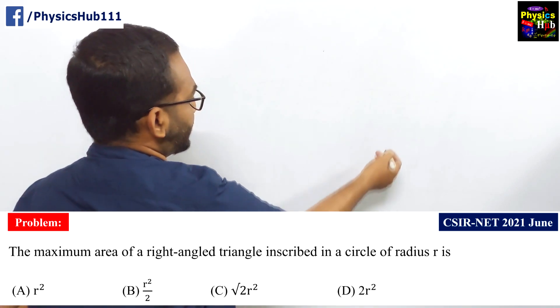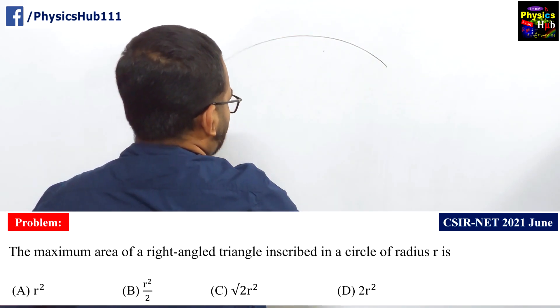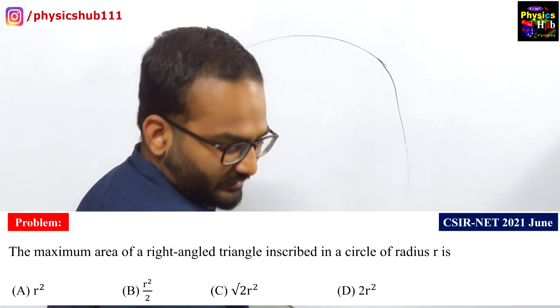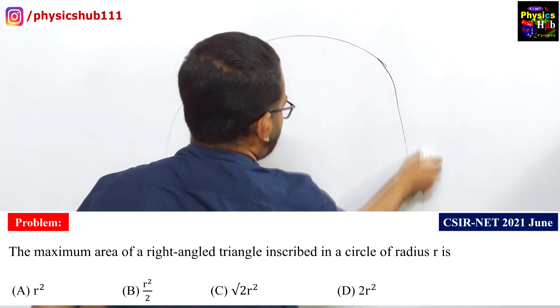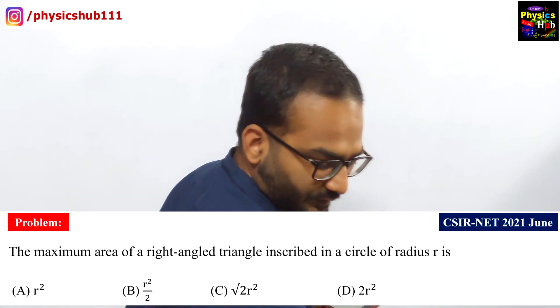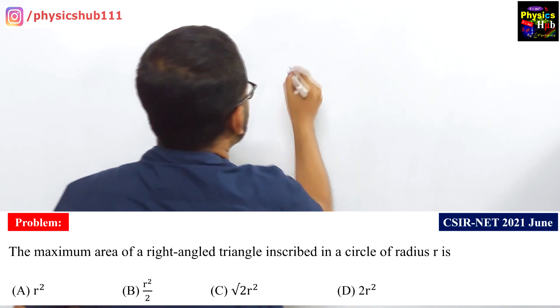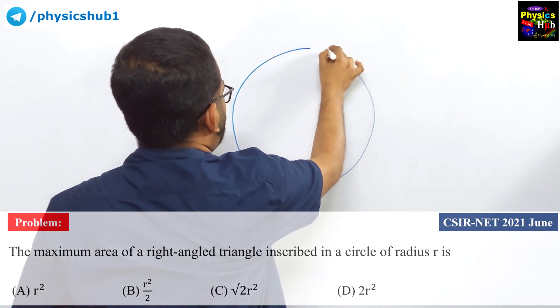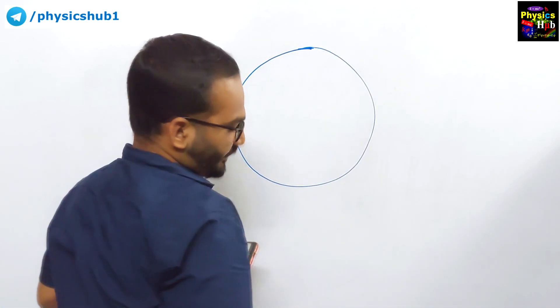So we have a circle. I don't know how well I can draw the circle. This is not a circle, this is something else. Anyway, let us draw a small circle. That is in my capacity. So this is the circle, not as bad as before.